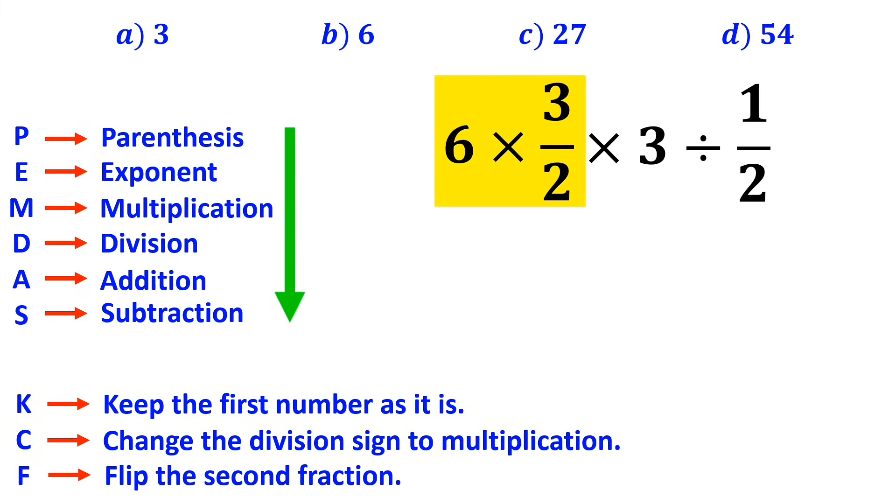Now, the 6 and the 2 in the denominator of this fraction can be simplified. And we can rewrite this expression as 9 times 3 divided by 1 over 2.